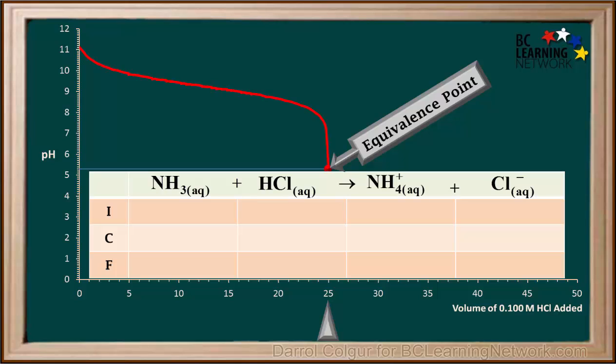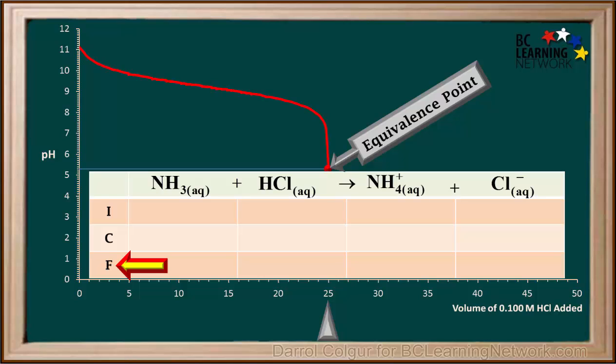In order to understand what we have at the equivalence point, we construct what is called an ICF table. I stands for the initial moles, C stands for the change in the number of moles as the reaction goes to completion, and F stands for the final number of moles of each component remaining. Initially, we had 25 ml of 0.1 molar NH3 in the beaker — that is 0.025 liters times 0.1 mol per liter, which equals 0.0025 moles.